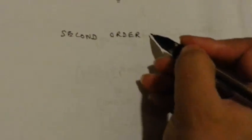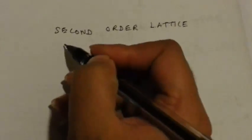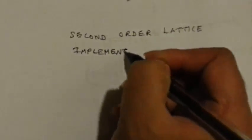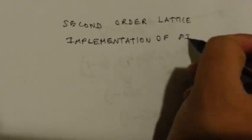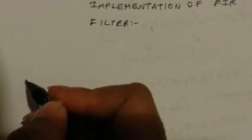Now we will start the second order lattice structure. As I told earlier, for a second order FIR filter, you have to cascade two first order sections in series. So the input is X of N, and you will have two lattice structures cascaded in series — two first order sections.